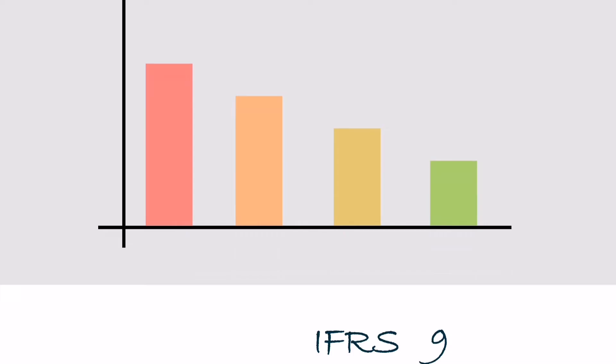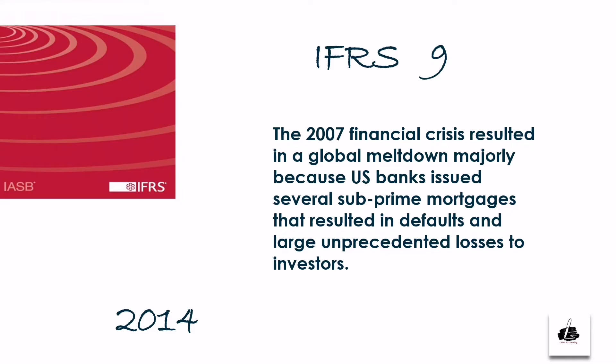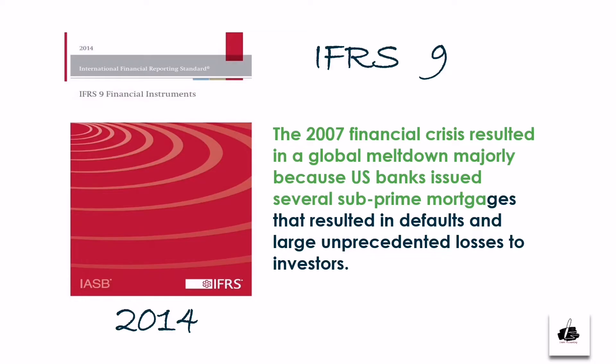In 2014, the International Accounting Standards Board issued IFRS 9. This is partly because the global financial crisis of 2007 revealed weaknesses in the accounting treatment of financial instruments, particularly in relation to the recognition of impairments and fair value measurements. IFRS 9 aimed to incorporate lessons learned from the crisis and strengthen the accounting and reporting standards to address these deficiencies.